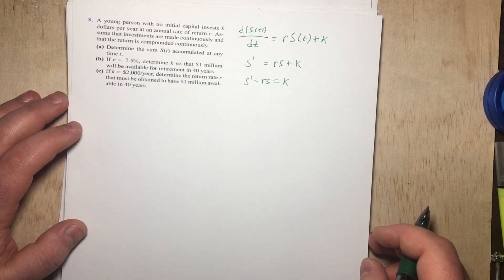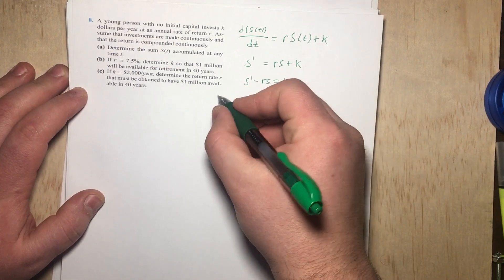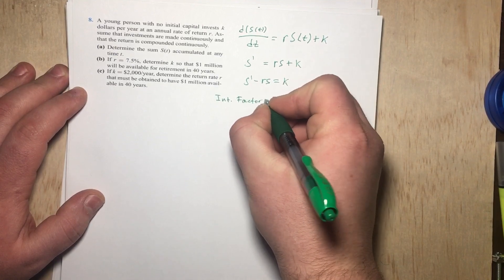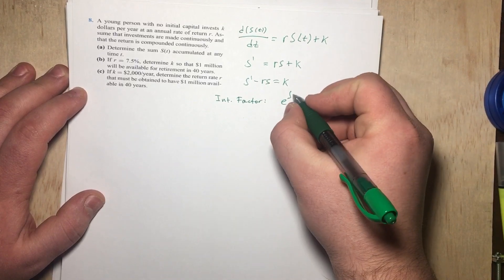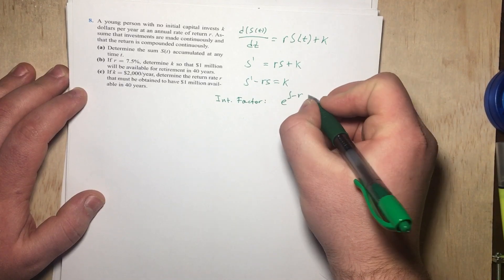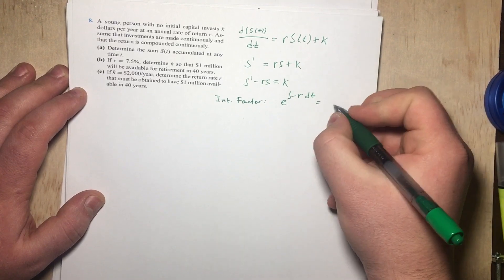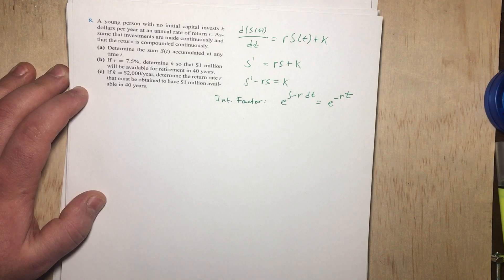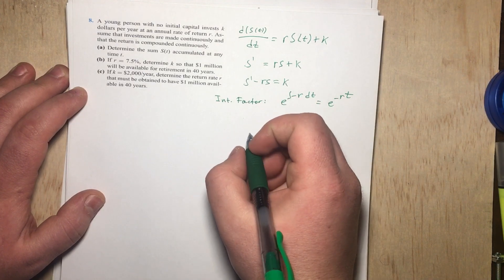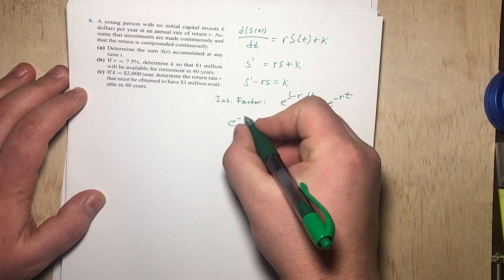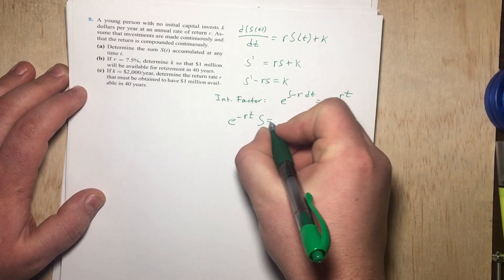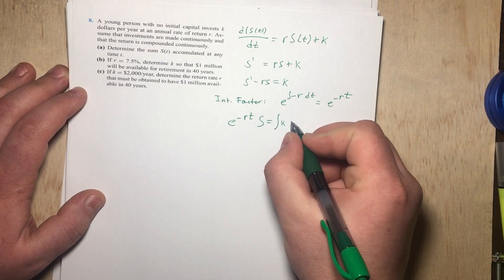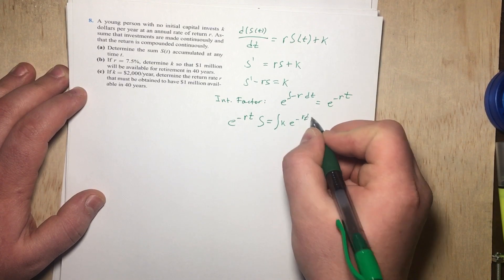So it looks like we can use the integrating factor, which is going to be this one right here. It's going to be e^(-R dt). So in other words, it's going to be e^(-Rt). That is our integrating factor and using the integrating factor method of solving differential equations, we obtain e^(-Rt) times S equals the integration of K times e^(-Rt) dt.